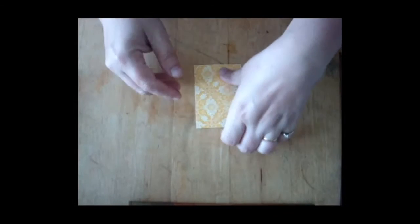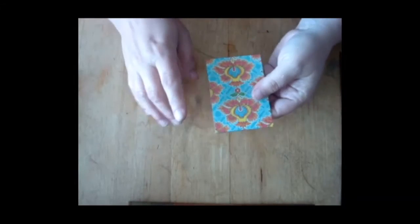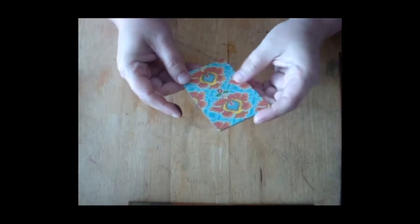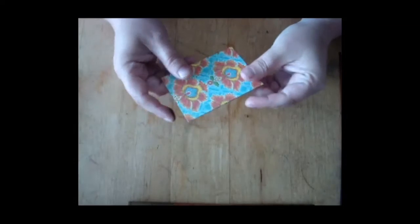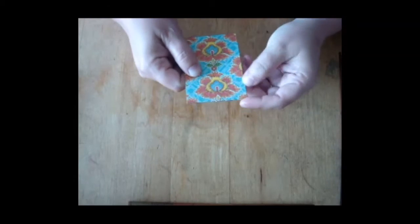There we go. So there's the base of our card. The really nice thing about rubber cement is that your paper will not buckle or curl up or wrinkle. It'll pretty much stay just like that.